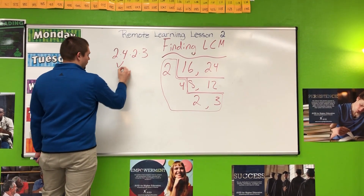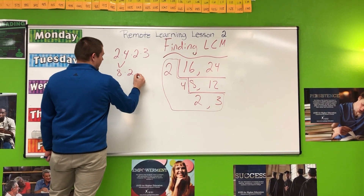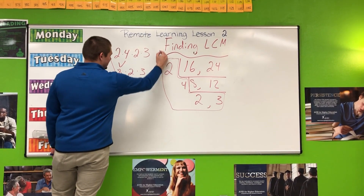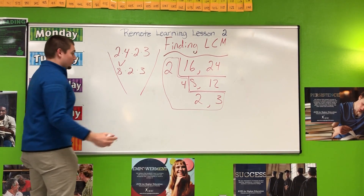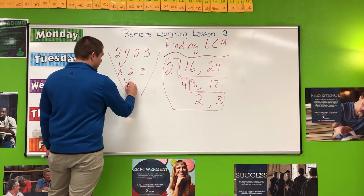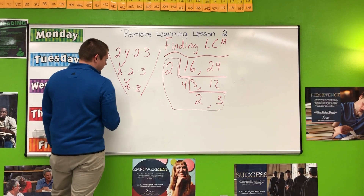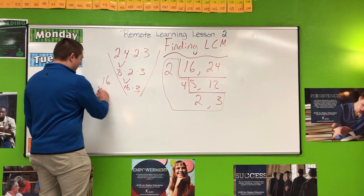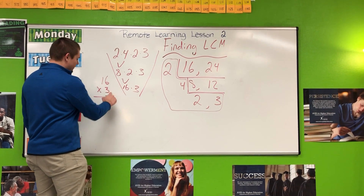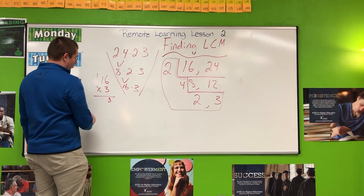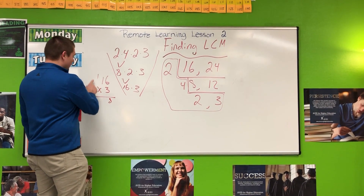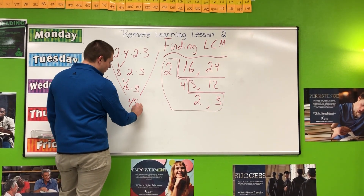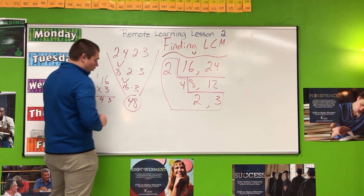One at a time: 2 times 4 is 8, times 2, times 3. Remember, we're creating that tornado to get down to one number. 8 times 2 is 16, and then 16 times 3. I can't do that in my head, so off to the side — 16 times 3: 6 times 3 is 18, carrying the 1; 3 times 1 is 3, plus 1 is 4. So our least common multiple of 16 and 24 is 48.